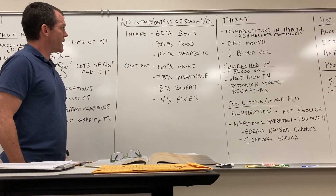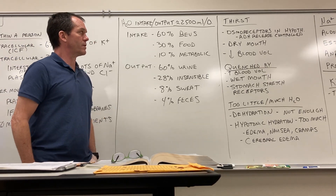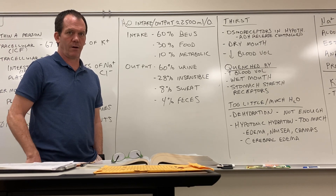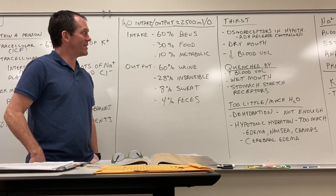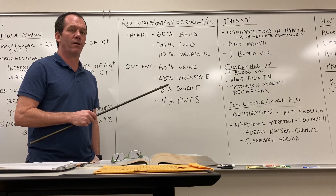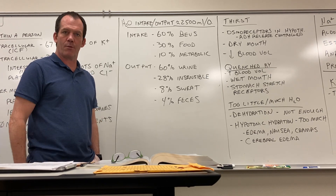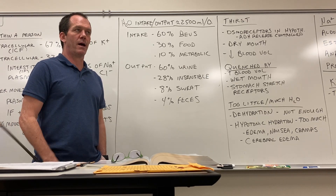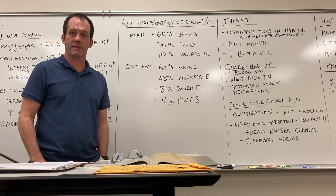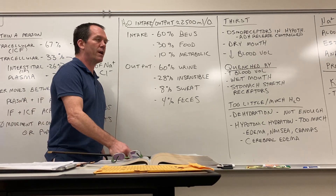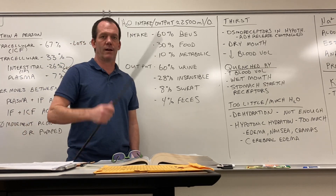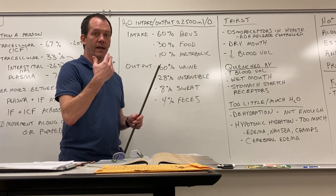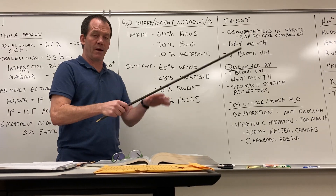Water input and output are both about 2,500 milliliters — roughly 2.5 liters — as a basic average. If you're active, it's much more than that. After a run this morning, I probably drank 2.5 liters right away because I'd lost a lot. If you're running, working outside, or it's hot, you'll lose a lot more and need to compensate with greater intake. But intake and output balance out over time — you don't take in more than you lose without consequence.